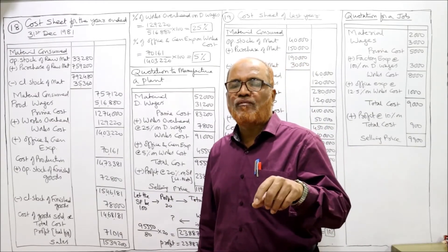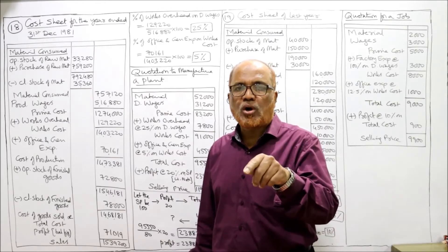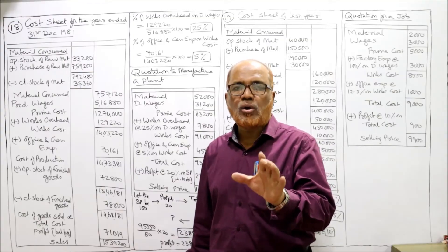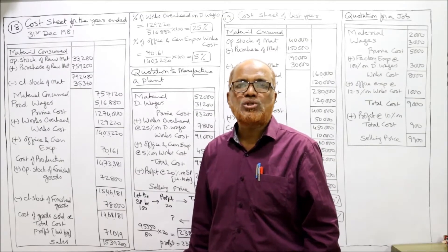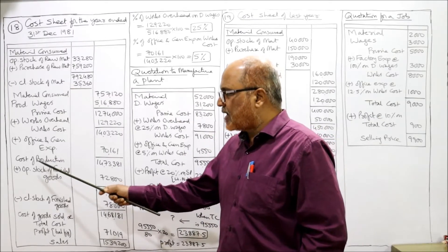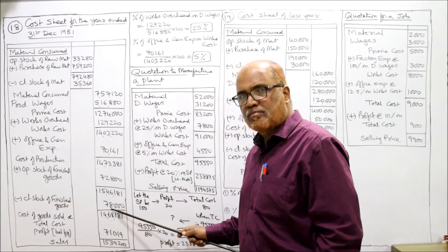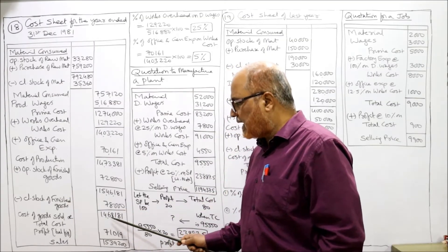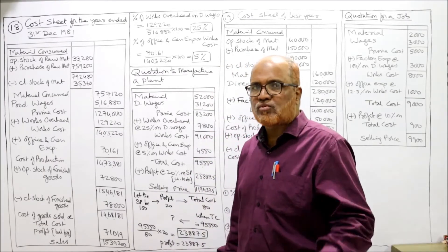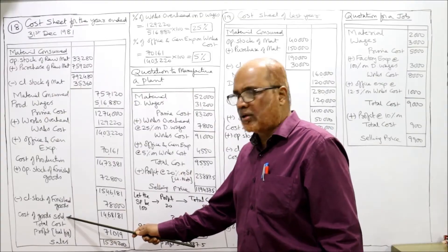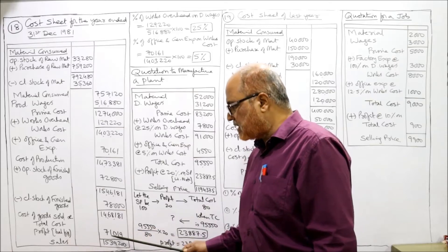In this problem, opening stock of finished goods and closing stock of finished goods are given. Opening stock of finished goods will be added and closing stock of finished goods will be subtracted from cost of production, so we get cost of goods sold 14,68,181. We don't have any selling and distribution overhead, so our total cost will stop at cost of goods sold. Sales are given in the problem 15,39,200, so profit is the balancing figure.